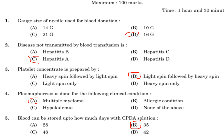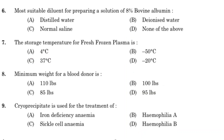Sixth question: most suitable diluent for preparing a solution of 8% bovine albumin. Option A: distilled water. Option B: deionized water. Option C: normal saline. Option D: none of the above. Answer is Option C, normal saline.